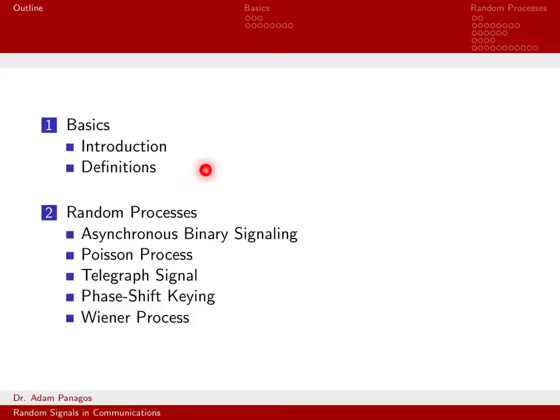After we've done these basic definitions and introduced the concept of a random process, then we'll actually turn our attention to studying a handful of very commonly encountered random processes. This will give us an opportunity to apply these definitions and compute different properties and functions of these random processes. We'll be computing mean functions and correlation functions, and just understanding how these different random processes, such as Poisson processes and phase shift keying and Wiener processes work.